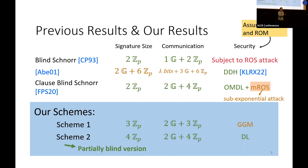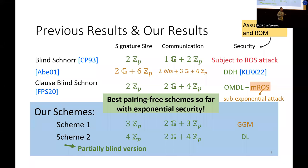A very appealing feature of this second scheme is that it admits a partially blind version, where partially blind means it allows a part of the message to be known by the signer. So as you can see, our scheme is the most efficient pairing-free scheme so far with exponential security.